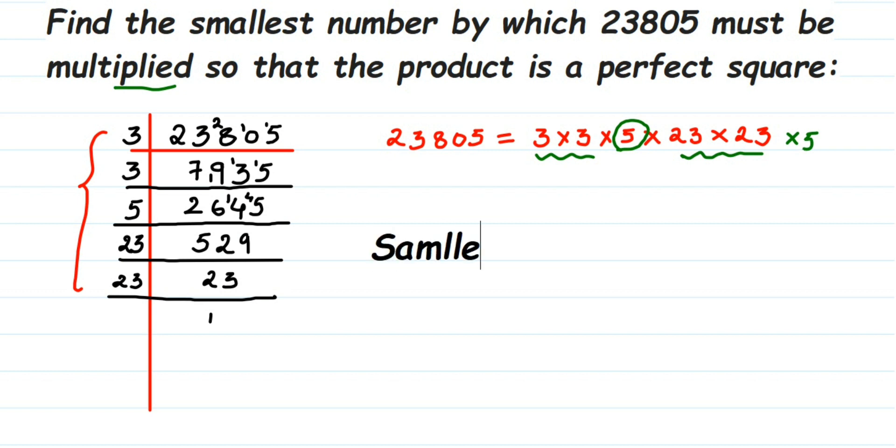Whenever you see this type of question, just do a prime factorization and see which number is not paired up. That number will become the smallest number to be multiplied.